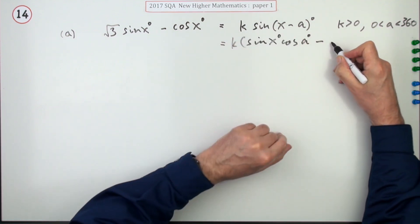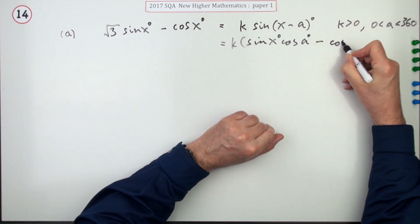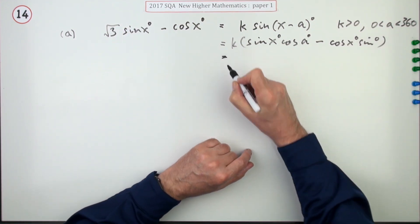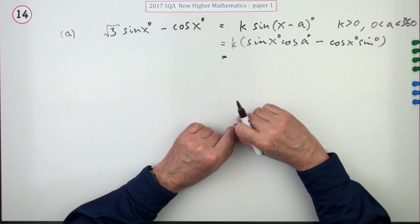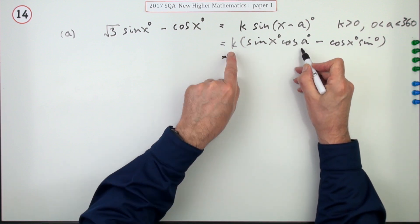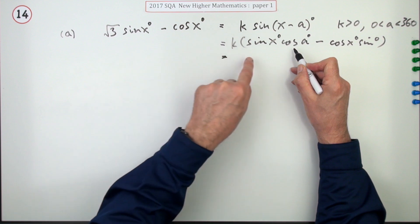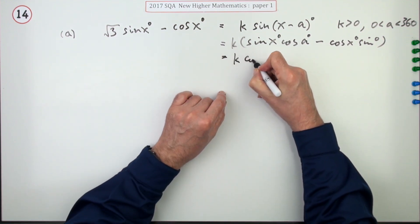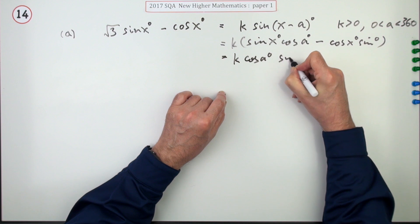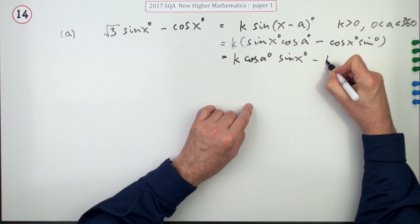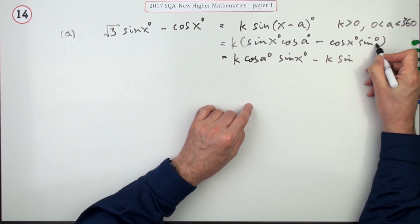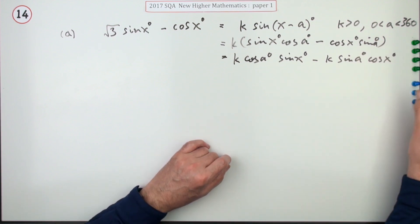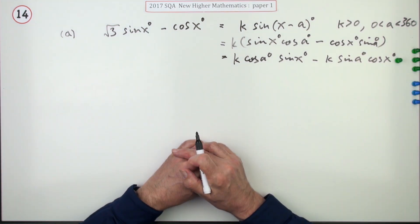So that's sine a · sin x · cos a minus cos x · sin a. The first mark is for doing this expansion. I prefer to tidy up and get the coefficients stated properly: the coefficient of sine x is k cos a, and the coefficient of cos x is k sin a. That's the first mark.